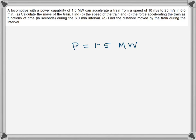There are a couple of ways to solve this, so I will show both methods. For the first method, we write P = F × v. We know we can write F = ma, so substituting gives P = ma × v. With P given as 1.5 × 10⁶ watts, we need to find m.